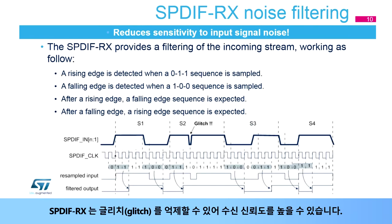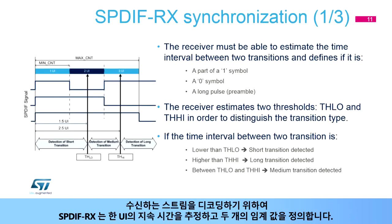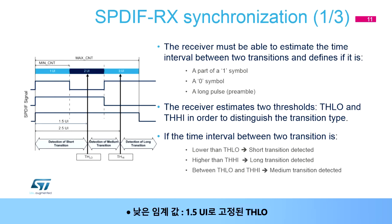The SPDIFRX is able to suppress glitches, increasing reception reliability. In order to decode the incoming stream, the SPDIFRX estimates the duration of one UI and defines two thresholds: the low threshold TH_low, fixed to 1.5 UI, and the high threshold TH_high, fixed to 2.5 UI.